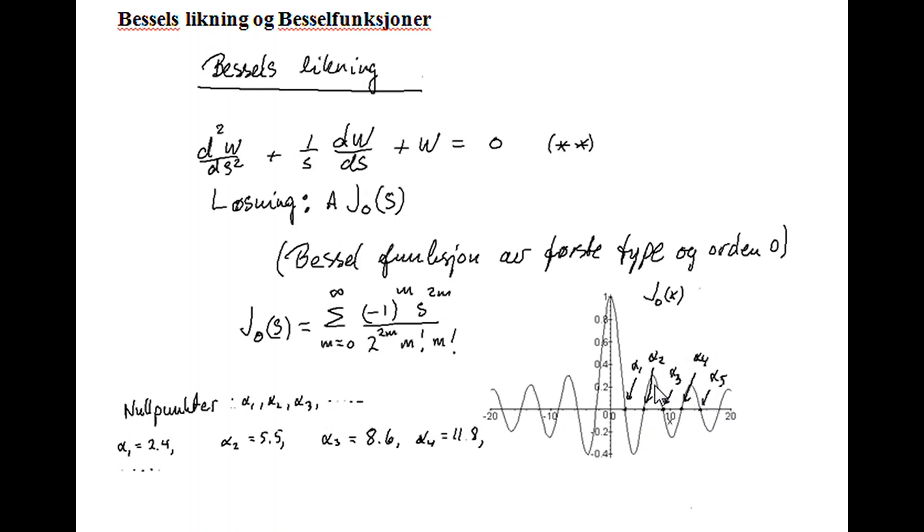And these alpha numbers are available from tables, and are easily found by numerical methods. The first value is 2.4, the second is 5.5, the third is 8.6, and the fourth is 11.8.